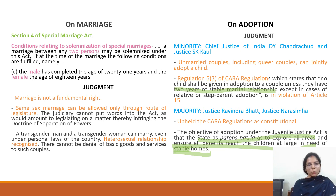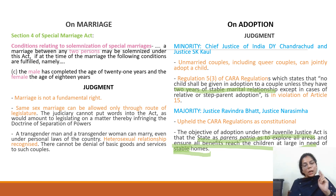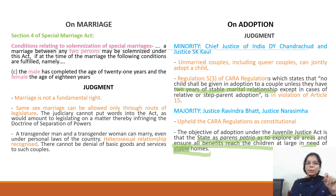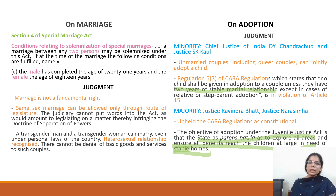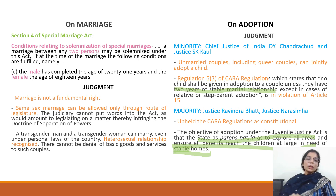Moving on to the concept of marriage — Section 4 of the Special Marriage Act deals with conditions relating to the solemnization of special marriage, wherein two persons can marry if at the time of marriage the male has completed the age of 21 years and the female has completed the age of 18 years. The usage of 'male' and 'female' in this legislation has been challenged as being discriminatory to a couple belonging to the LGBTQ community or to a homosexual couple.